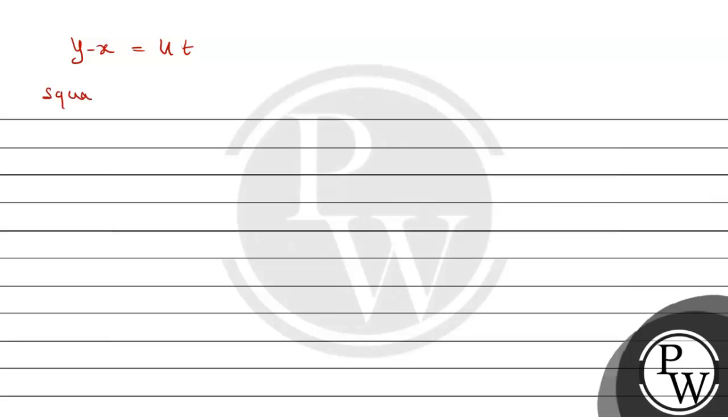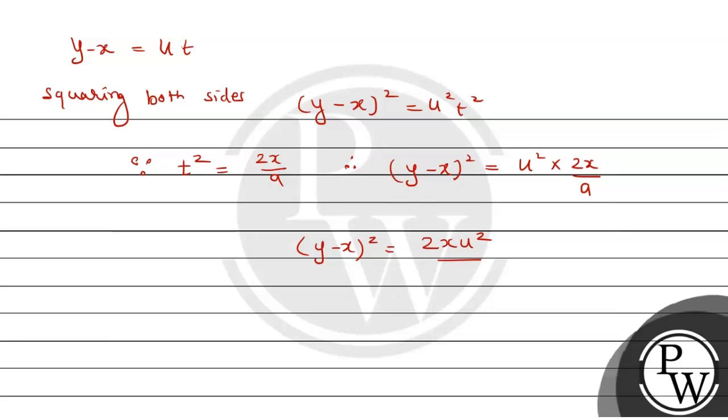Squaring both sides, we get y minus x whole square equals u square t square. Since we've told you the value of t square is 2x upon a, so therefore substitute the value: y minus x square equals u square into 2x upon a. Rearranging this, y minus x square equals 2x u square upon a.